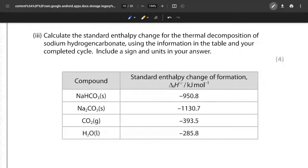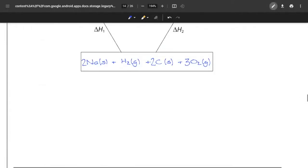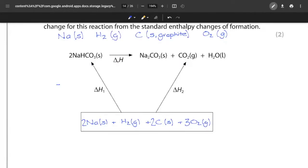Part three is now asking us to do the standard entropy change for this thermal decomposition using the information in the table and your completed cycle. We always want to include units and a sign in the answer. What I'm actually going to do here is rather than doing it underneath, I'm going to go back to my Hess cycle and I'm going to label everything.